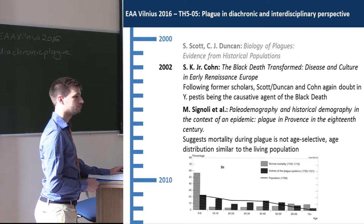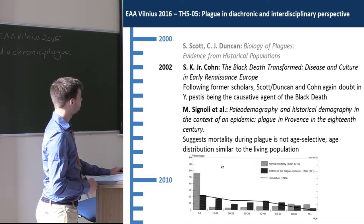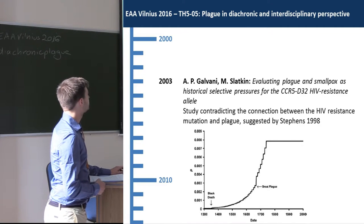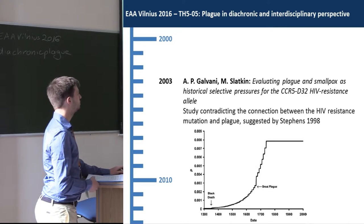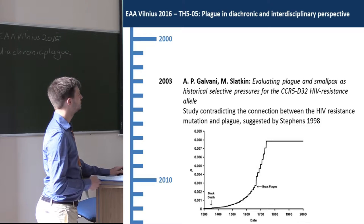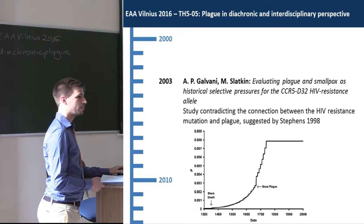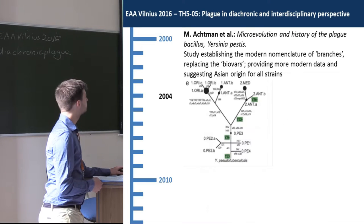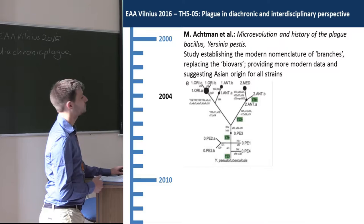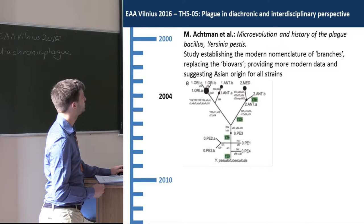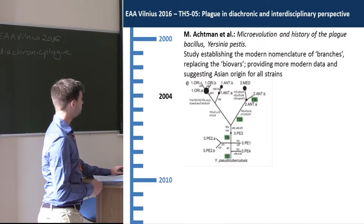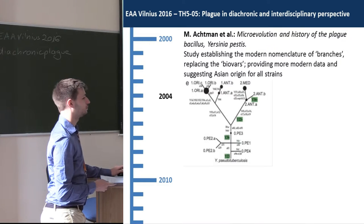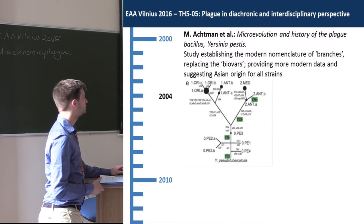There was also another epidemiology study on the Black Death this year. Then in 2003, a review by Galvani and Slapkin more or less finally showed that the specific immunity allele CCR5 is not related to the Black Death but probably to smallpox. In the next year, Achtmann again published an important study establishing a nomenclature of branches for Yersinia strains instead of biovars, since the biovars do not accurately reflect the biology of the strains.